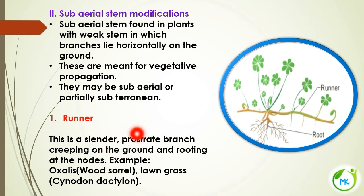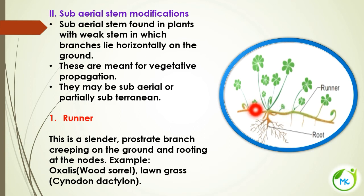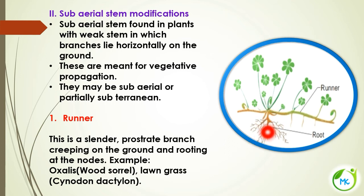A runner is a slender, prostrate branch that lies flat on the surface of the ground. It creeps on the ground and produces roots at the nodes. Examples are Oxalis and lawn grass — Cynodon dactylon.